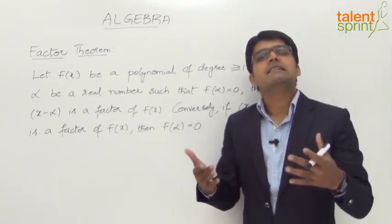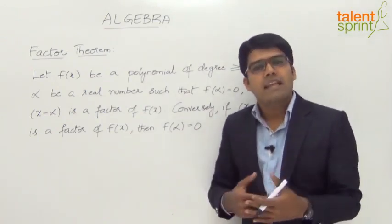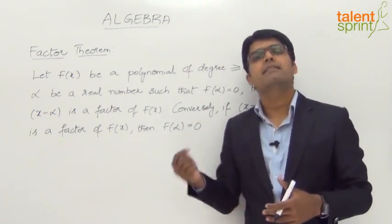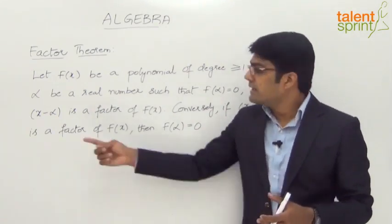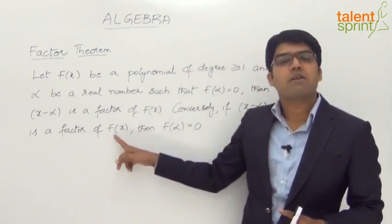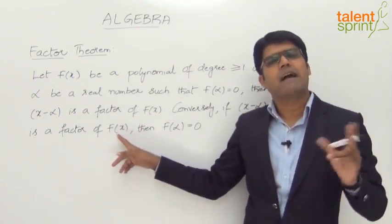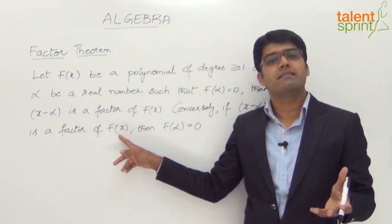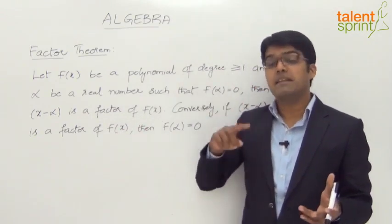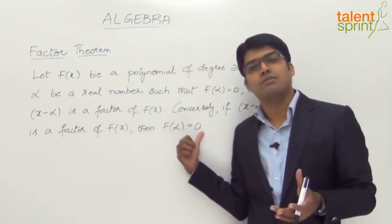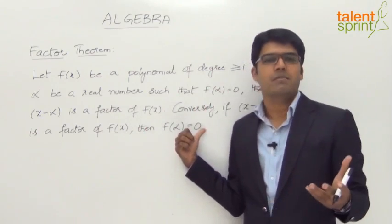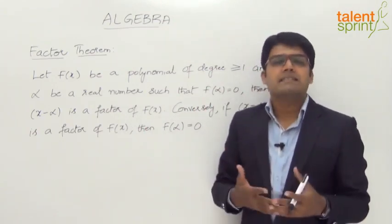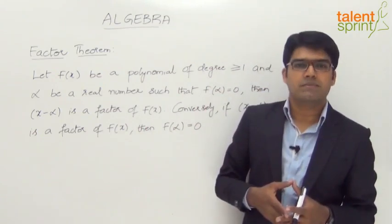For example, we say that 3 is a factor of 9. What does it mean? When 9 is divided by 3, the remainder is 0. Similarly, if x minus alpha is a factor of f of x, there shouldn't be any remainder, which means the remainder as per the remainder theorem — f of alpha — should be equal to 0. This is how the remainder theorem and the factor theorem are interlinked.